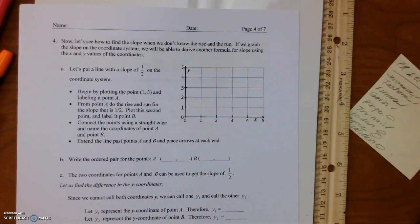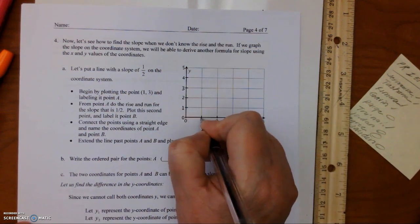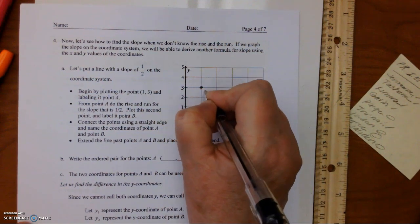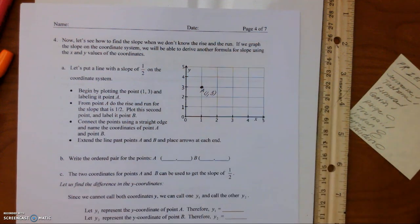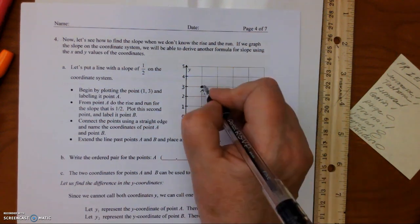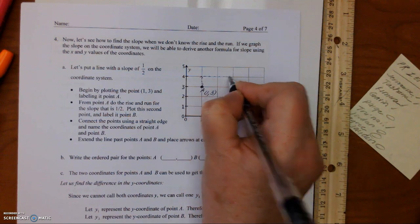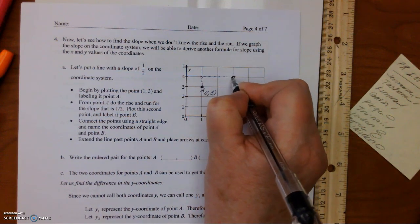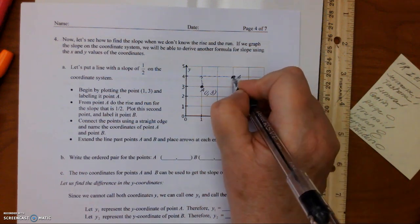So let's put a line with a slope of one half on the coordinate system. Begin by plotting the point (1, 3). So this is point A and it's one comma three. From point A, do the rise and run from a slope that is one over two. Plot the second point. We're going to go up one and over two, and this will be the second point, which is B, which is over three, up four.